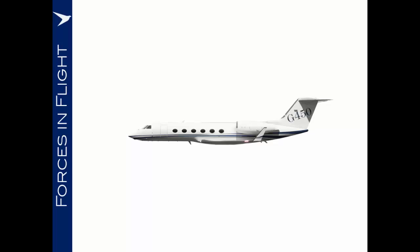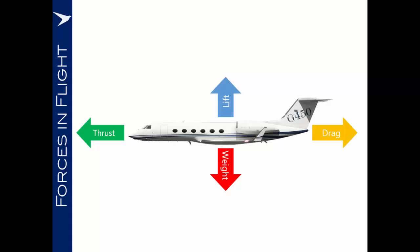An aircraft in flight has the following four forces as the primary influences on its direction in flight. The weight of the aeroplane — that is the mass multiplied by gravity — will always act towards the centre of the earth. Lift, generated by the wings, will counter the effects of weight and enable us to fly. Thrust from the engines will drive us forwards and counter drag, which tends to slow us down.